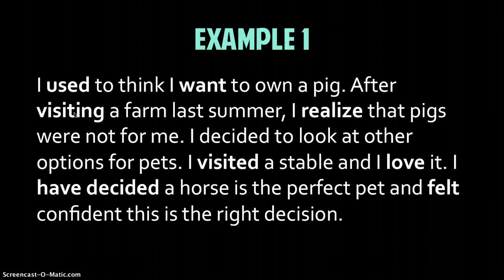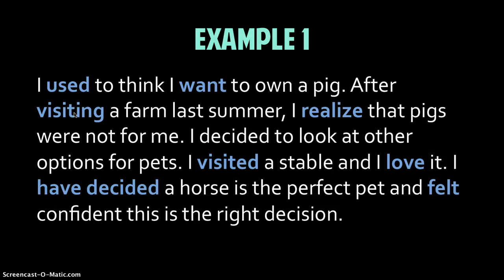'I've decided a horse is the perfect pet and felt confident this is the right decision.' What makes this paragraph annoying or subtly difficult to read is the inconsistency — from past tense verbs to present, to past, to present. The first step is to identify what the verbs are. 'I used to think I want to own a pig' — right there it's a little bit tricky. Then we have 'visiting,' 'realize' — a present tense — back to past tense, then present. So it hops around a little bit.